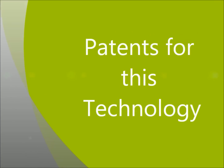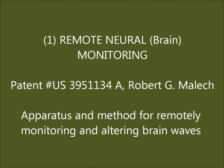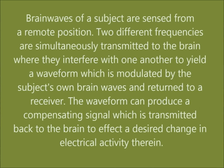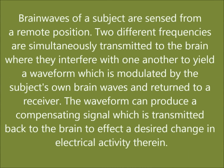Patents for this technology. This is the Robert G. Malik patent — Remote Neural Monitoring: Apparatus and Method for Remotely Monitoring and Altering Brainwaves. Brainwaves of a subject are sensed from a remote position. Two different frequencies are simultaneously transmitted to the brain where they interfere with one another to yield a waveform which is modulated by the subject's own brainwaves. The waveform can produce a compensating signal which is transmitted back to the brain to effect a desired change in electrical activity therein.